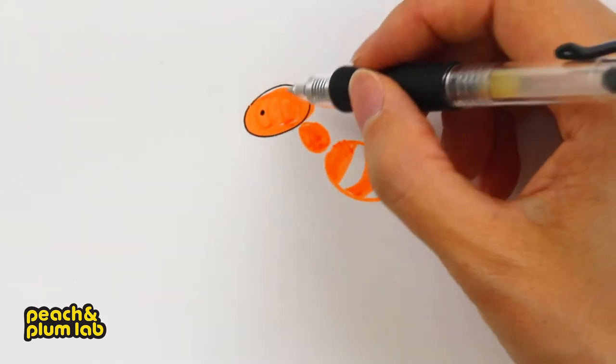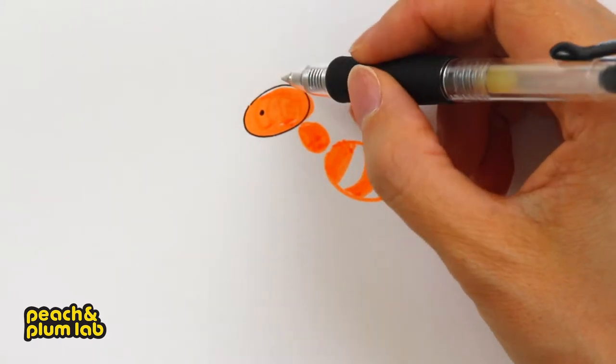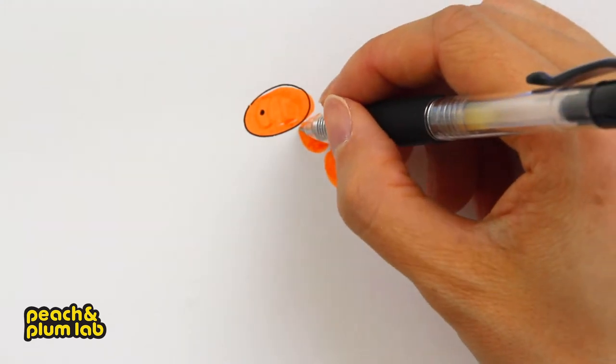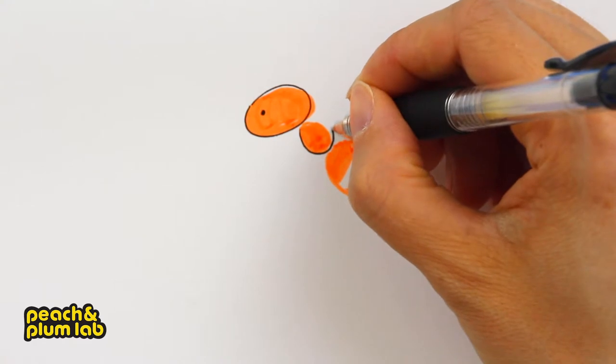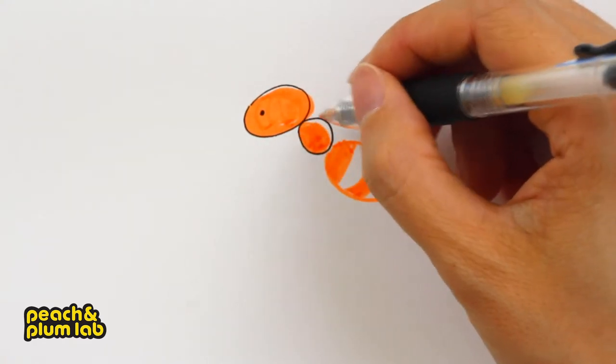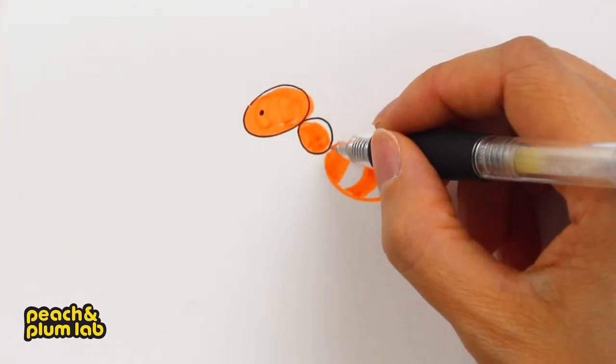Pay attention that I left a little bit white part on the head and that can indicate where the light comes from. I can do exactly the same for the other parts, leaving out a little bit white space on the top. I'm going to outline the tail.